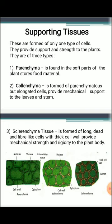Colenchyma is formed of elongated parenchyma-like cells whose walls are thick at the corners, with no intercellular spaces, as seen in the diagram. Colenchyma cells are found in leaves, stems, and petioles of herbaceous dicot plants. The next tissue is sclerenchyma, formed of long, dead, fiber-like cells with thick cell walls. It is present around the vascular bundles in stems, and in the veins of leaves and petioles.